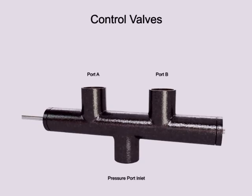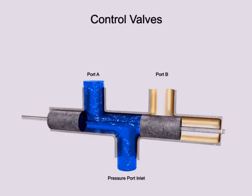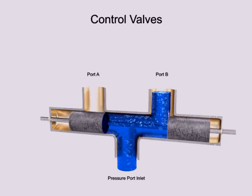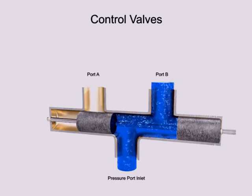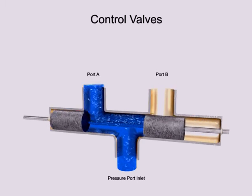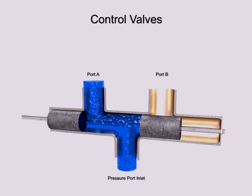Directional control valves are used to stop, start, route, and divert fluid streams without affecting the pressure level or the flow rate of the system. Directional control valves are identified by the number of ways that fluid can flow and the number of positions the valve can produce.